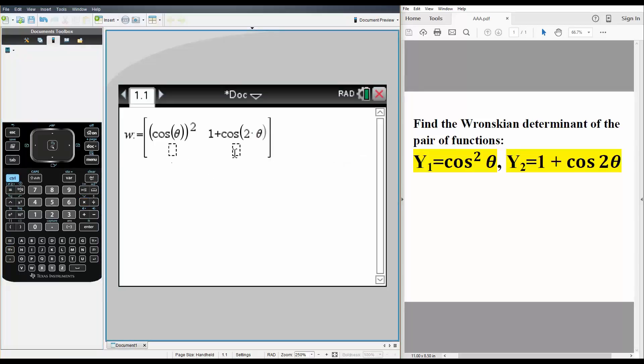On the bottom two rows, we take the derivative of each function respectively. We do shift minus, in terms of theta, then highlight the expression and do control C to copy, then control V to paste it.